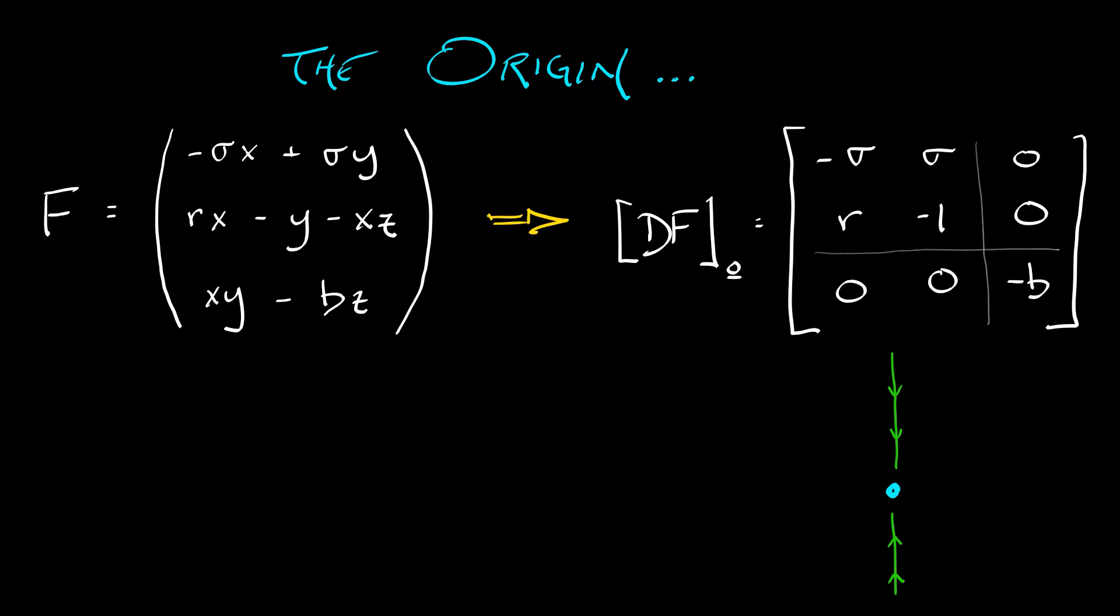That means that the origin has this direction of stability along the z-axis. Now, the other two eigenvectors are going to lie in the xy-plane. Let's investigate that two-by-two block.